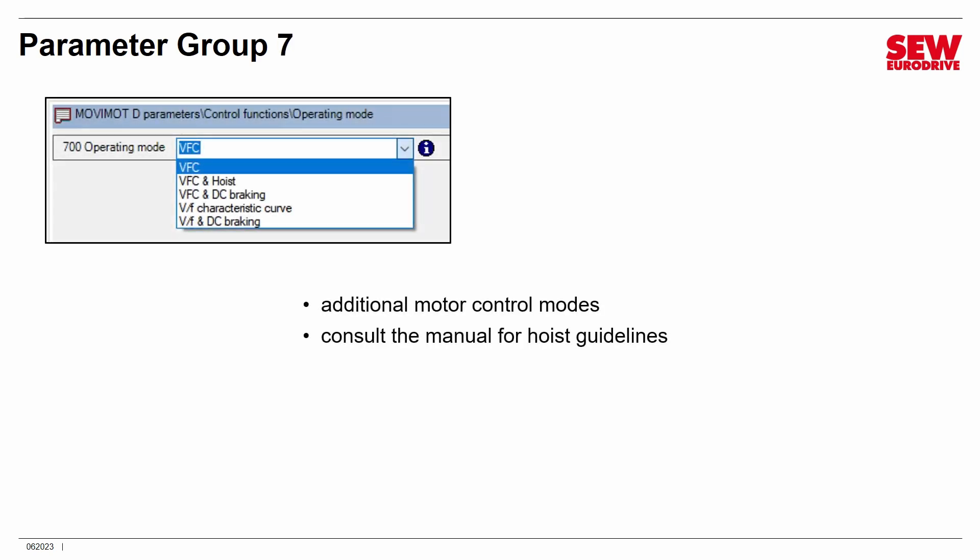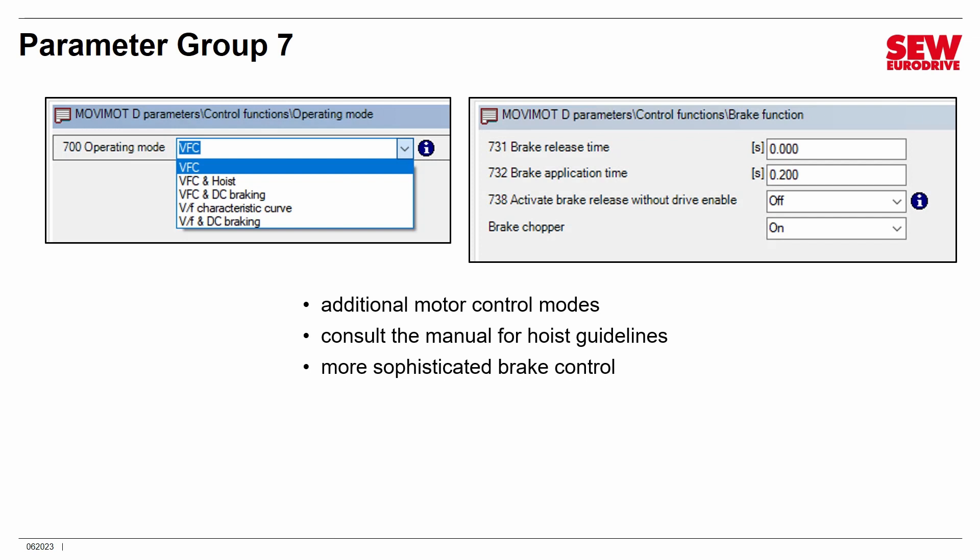Parameter Group 7 has additional motor control modes. Instead of just VF and VFC, there are now two VF modes and three VFCs. There is a VFC mode that can be used with hoists and vertical applications — refer to the manual for that as it requires very careful setup for safety. We also have more sophisticated brake control where you can set the times, and you can activate the feature where the brake can release without a drive enable — this has a parameter here in Expert Mode with the 'I' symbol.